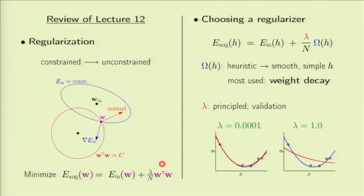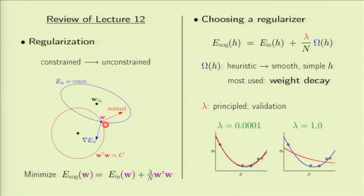That equivalence makes us focus on the augmented error form of regularization in practice. The argument was to take the constrained version and look at it either as a Lagrangian — the formal way of solving it — or geometrically, to find a condition corresponding to minimization under a constraint and show that it is locally equivalent to minimizing this in an unconstrained way.